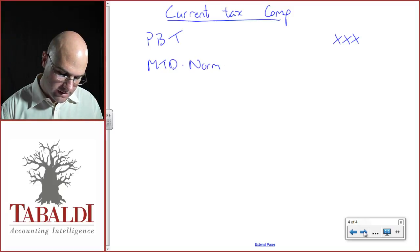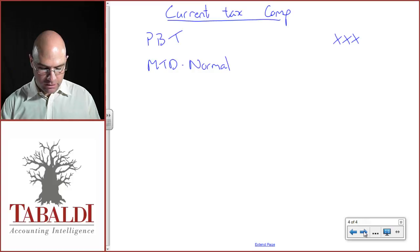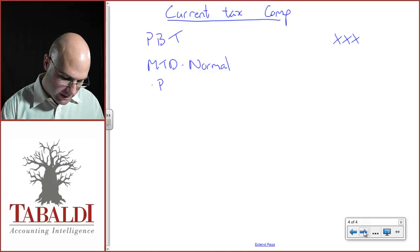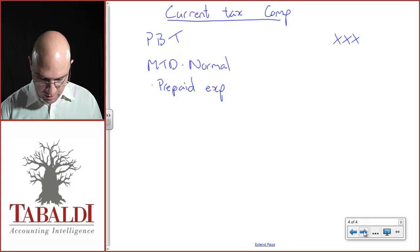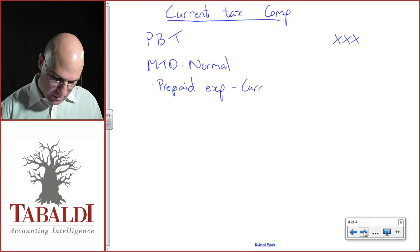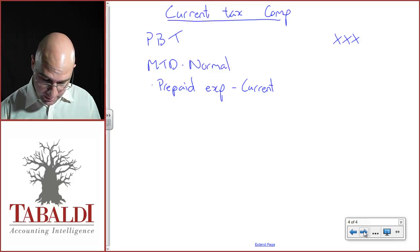The normal movements in temporary differences. In this scenario, I'm now going to have my prepaid expense. This is more of a tax adjustment than an accounting reversal, but let's go through this. The current year, if you remember my journal, I went debit prepaid expense, credit bank.